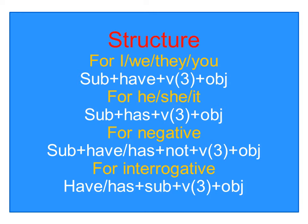I have explained the structure to you before. For I, we, they, and you — that is first person plural — we use: subject + have + verb third form + object. Remember, in present perfect tense, verb third form is used.